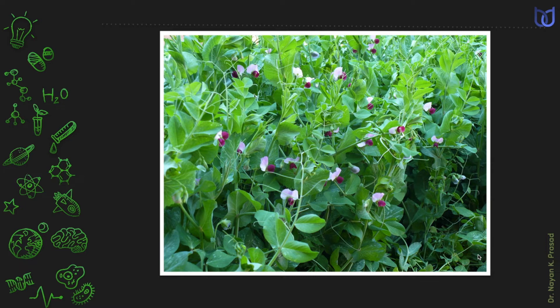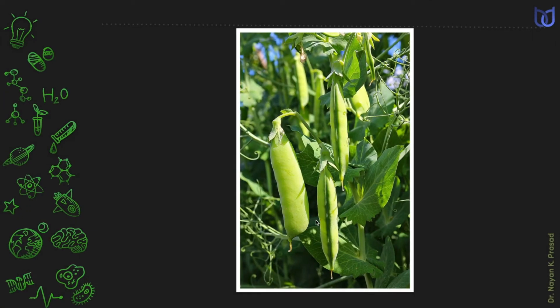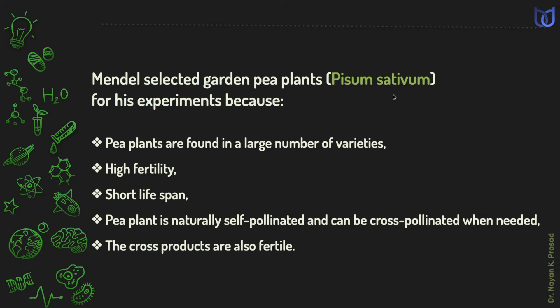However, it is a naturally self-pollinating plant because flowers are bisexual. You must remember the common garden pea plant scientifically called Pisum sativum. Mendel selected garden pea plants for his experiments because pea plants are found in a large number of varieties. They have high fertility and are of short lifespan. Pea plant is naturally self-pollinated and can be cross-pollinated when needed. The cross-products are also fertile.